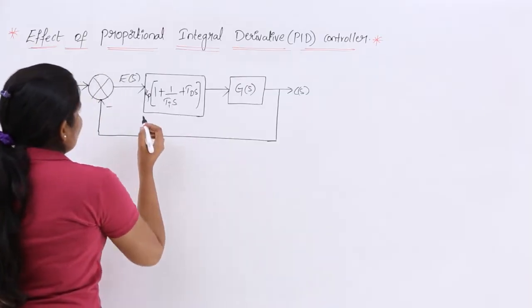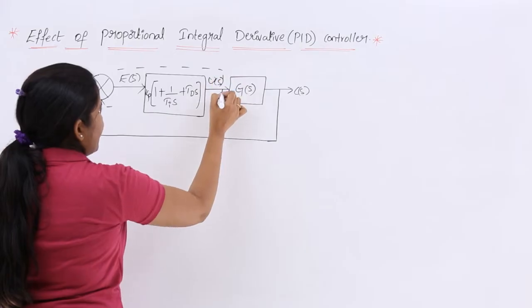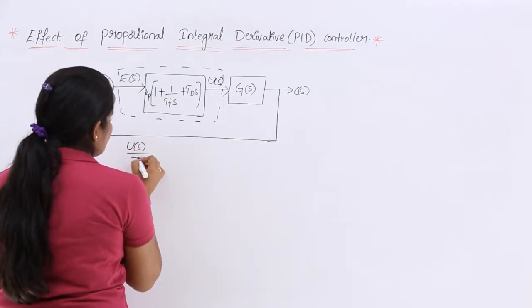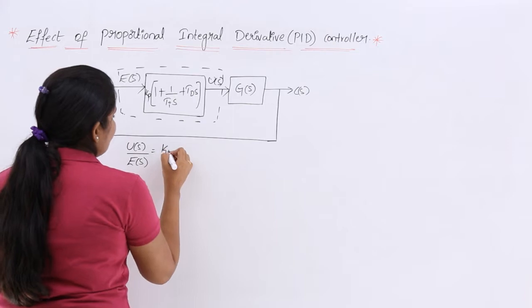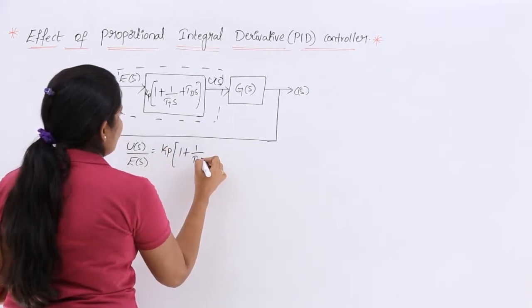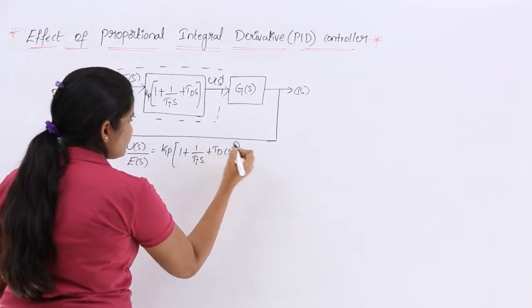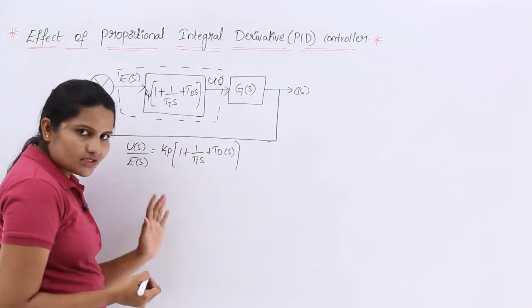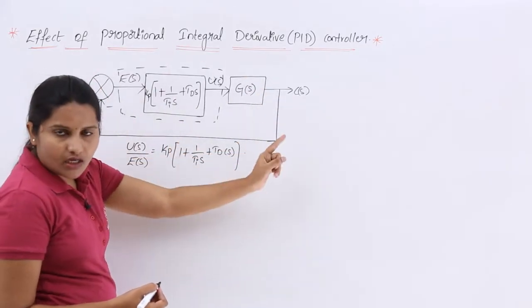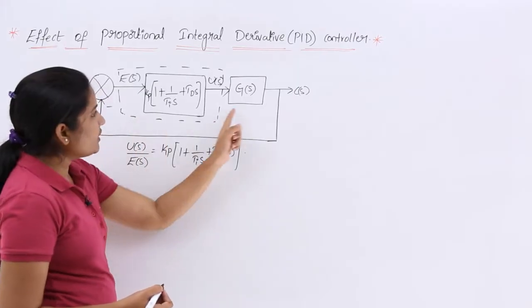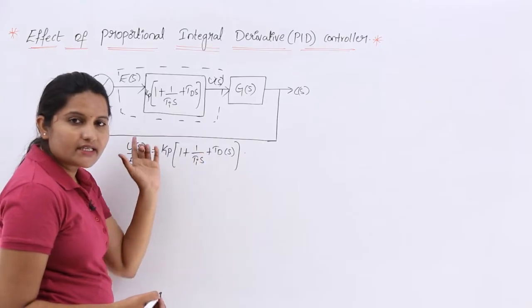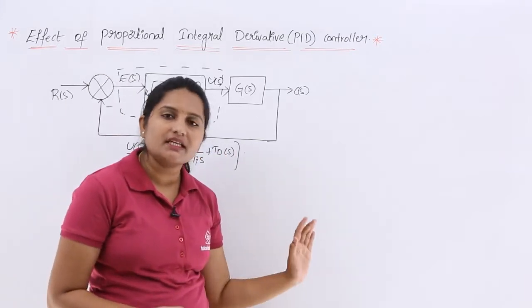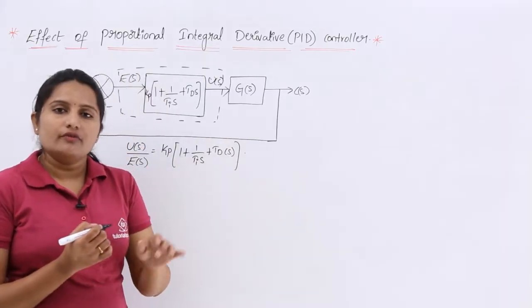The PID controller has output U(s) and input error signal E(s). The transfer function U(s)/E(s) is equal to Kp times (1 + 1/(Ti·s) + Td·s). We need the overall transfer function. For a closed-loop system with feedback, it is G(s) divided by (1 + G(s)·H(s)), where the forward gain and feedback gain combine to give the closed-loop transfer function.